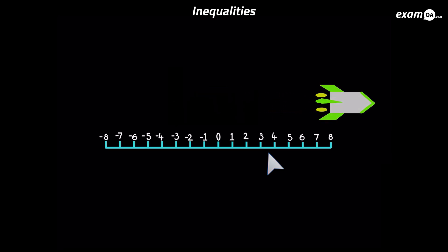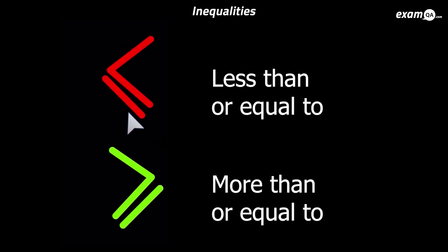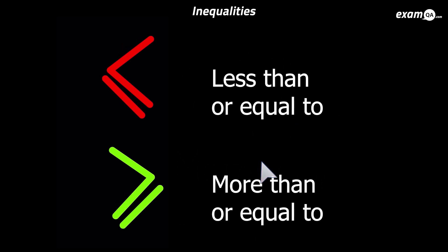Here we've got the signs again but they've got an extra line on them. All that line means is 'or equal to'. So the less than sign becomes less than or equal to, and the more than sign becomes more than or equal to.